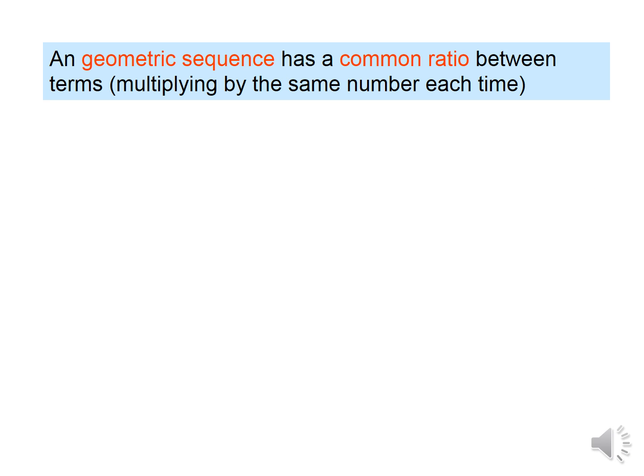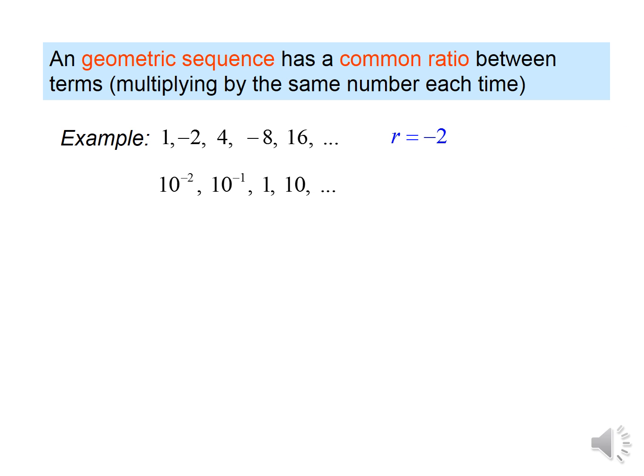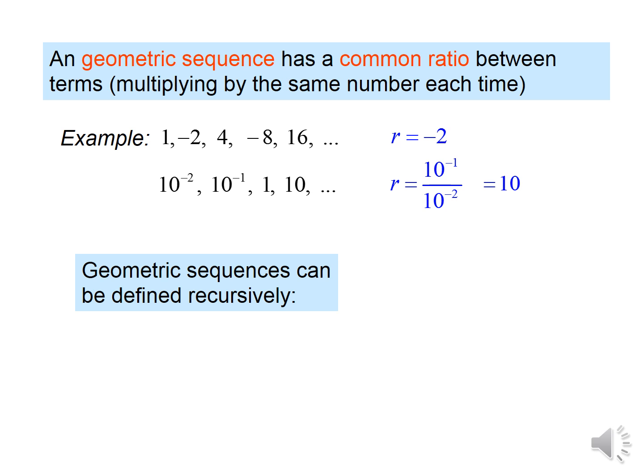In this class we will deal mostly with geometric sequences. A geometric sequence has a common ratio — it's the value that is multiplied by each term. In this example, r is negative two because we're multiplying each term by negative two to get the next term. If you have difficulty finding r, just divide two consecutive terms. We can define it recursively, but in this class we will deal more with the explicit form.